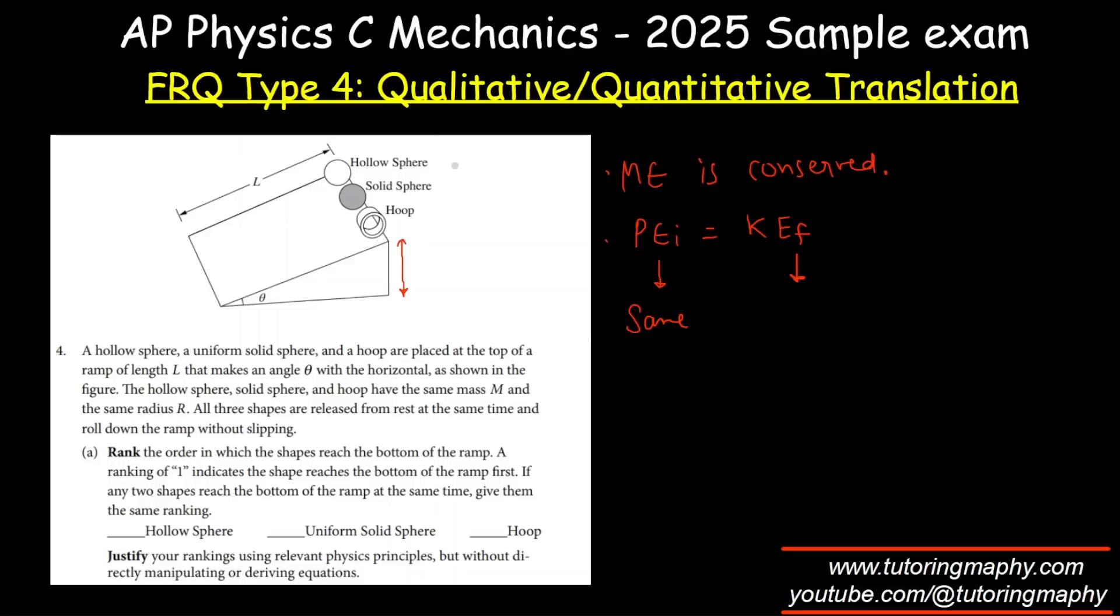By the way, what are the moment of inertia of these? For a hollow sphere, it is 2/3 MR squared. For solid sphere, it is 2/5 MR squared. And for a hoop, it is just MR squared. So this is 0.67 around, and this is 0.4, and this is just 1 as the coefficient.